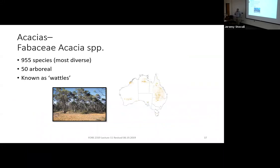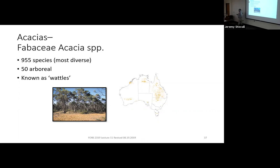Next up are acacias, in the Fabaceae family. They're pretty diverse — almost 1,000 species, but only about 50 reach tree-like stature. They're commonly called wattles, not acacias, in Australia. Their range maps are pushed inland, sometimes pretty far from the coast, because these trees can handle more arid environments.